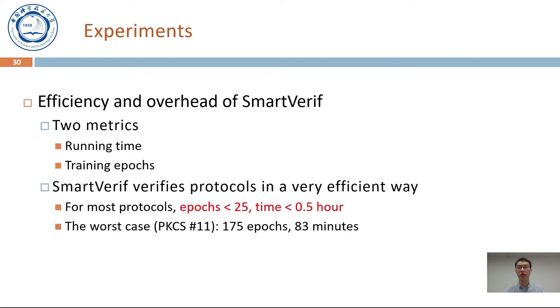For the efficiency and overhead of SmartVerif, we use two metrics, the running time and the training epochs. The results show that our tool verifies protocols in a very efficient way. For most protocols, the epochs are less than 25 and it costs less than half an hour. The worst case is PKCS number 11 protocol. Our tool uses 175 epochs and 83 minutes to find the correct proof path.